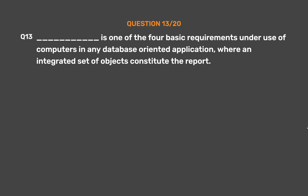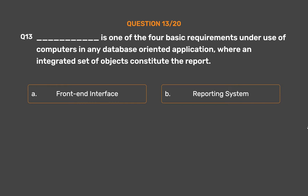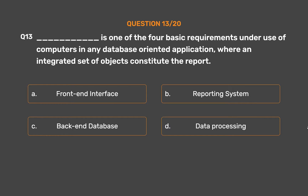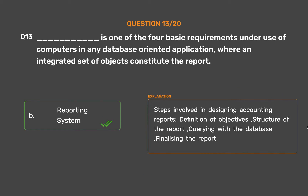Question number 13. Underscore is one of the four basic requirements under use of computers in any database-oriented application, where an integrated set of objects constitute the report. Option A: Frontend interface. Option B: Reporting system. Option C: Backend database. Option D: Data processing. The correct answer is Option B — Reporting system. Steps involved in designing accounting reports: definition of objectives, structure of the report, querying with a database, and finalizing the report.